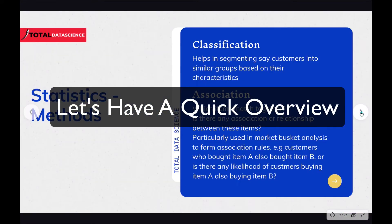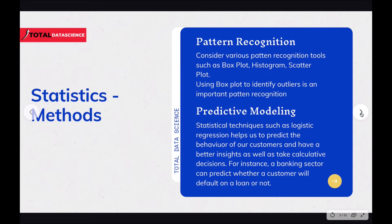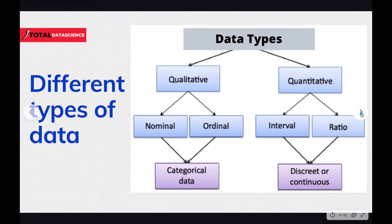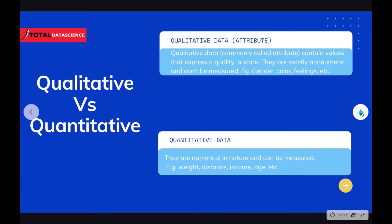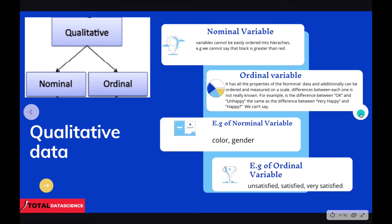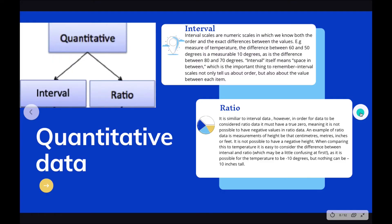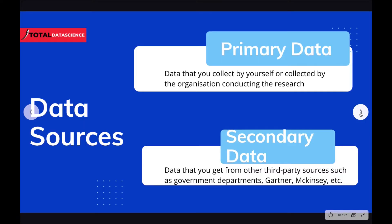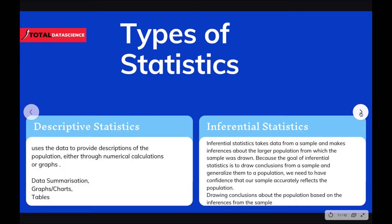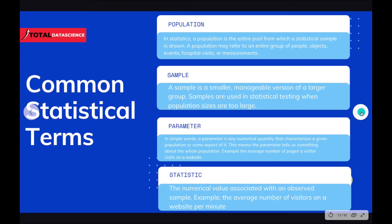We'll talk about classification, association, pattern recognition, and predictive modeling. We'll also dive deep into the various data types, since everything we do will circulate around data. We'll discuss data sources as well, and then cover the types of statistics — specifically descriptive and inferential statistics — dividing our study into those categories.